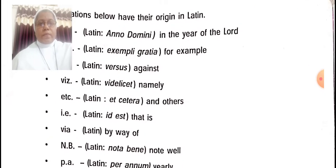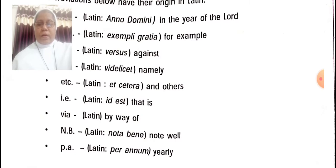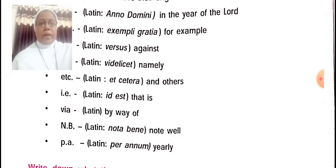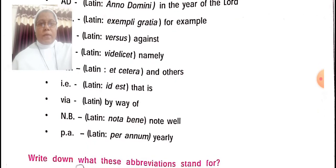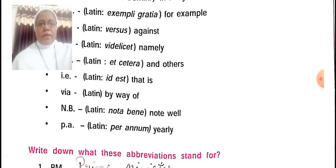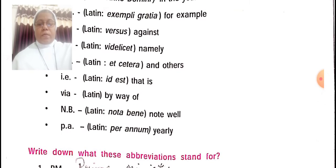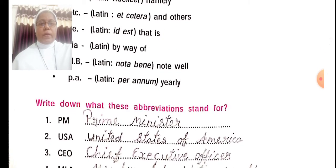Viz. — Latin Videlicet — namely. Etc. — Latin Et Cetera — and others. I.E. — Latin Id Est — that is. Via — by way of. N.B. — Latin Nota Bene — note well. P.A. — Latin Per Annum — yearly. Write down what these abbreviations stand for.